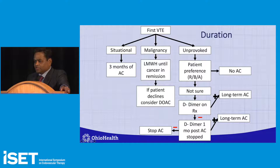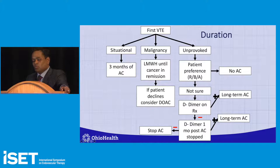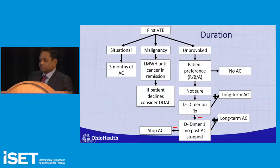If the patient doesn't want anticoagulation after discussion, document and respect that. If the patient is unsure, check a D-dimer while on anticoagulation — if positive, go for long-term anticoagulation. If negative, repeat D-dimer one month after stopping anticoagulation; if that is also positive, proceed with long-term anticoagulation. Two negative D-dimers allows stopping anticoagulation. Risk assessment models such as the DASH score, Vienna score, and HERDOO2 scores can guide decisions.